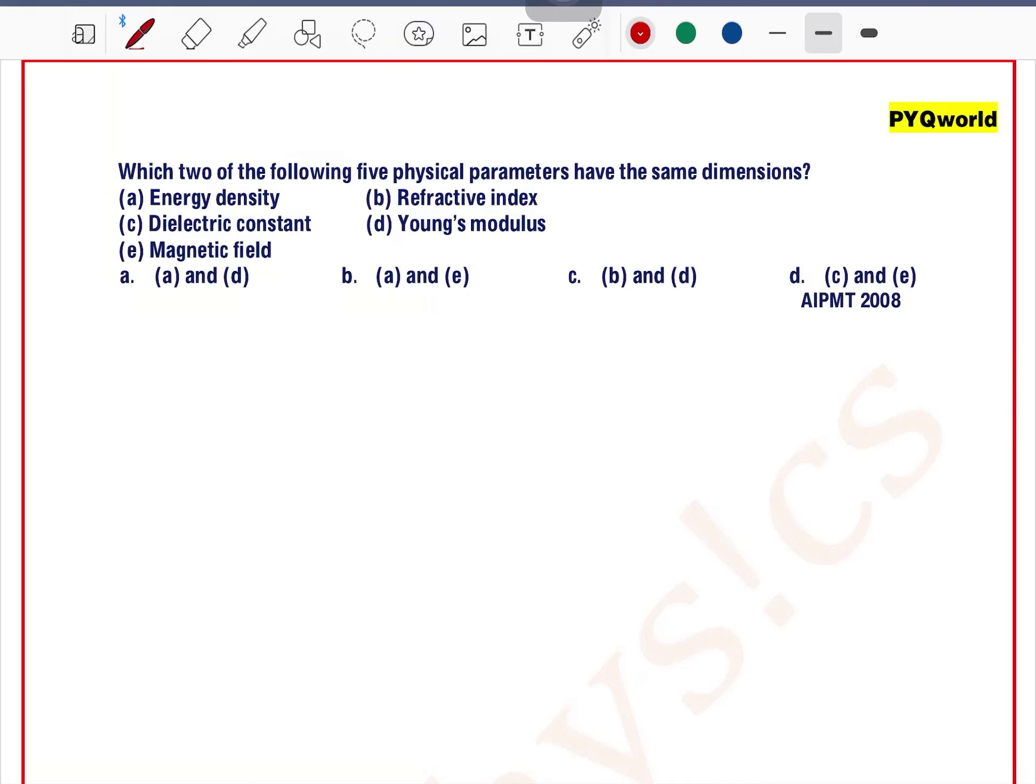Which two of the following five physical parameters have the same dimensions: energy density, refractive index, dielectric constant, Young's modulus, and magnetic field? You must know while solving this question the formula of each and every term.